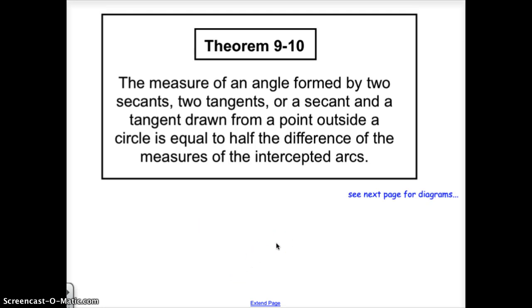So on the next theorem we have the statement, the measure of an angle formed by two secants or two tangents or a secant and a tangent drawn to a point outside the circle is equal to half the difference of the measures of the intercepted arcs.